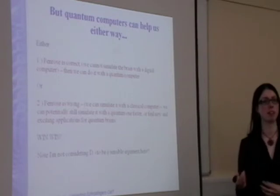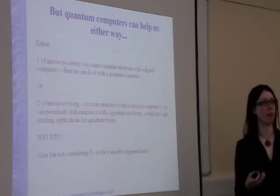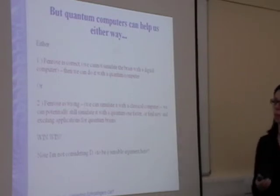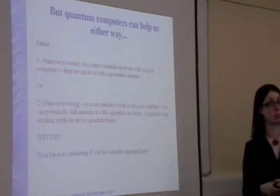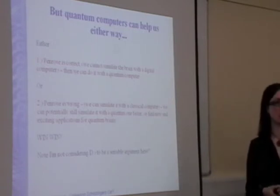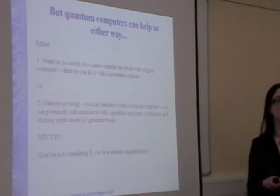And then we can do it with a quantum computer, because he's saying, okay, it's just quantum effects. Anything that relies on quantum effects, we can simulate with a quantum computer. Or he's wrong, and we can simulate the brain with a classical computer. Then we can potentially still simulate it with a quantum one faster. Or we can find new and exciting applications for quantum brains and quantum objects as we scale them up and try to use them in things like neural networks.